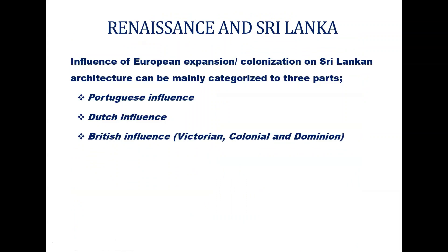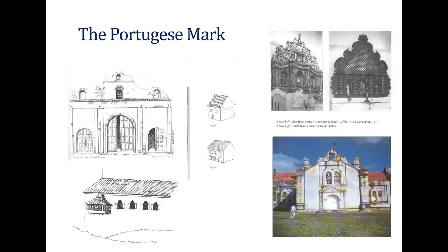Then the Renaissance influence in Sri Lanka — Portuguese, Dutch, and British. You can see how architecture changed. The Portuguese influence was mainly on churches because Catholicism was brought in; they built some beautiful churches. This one is beautifully done and is in Goa.